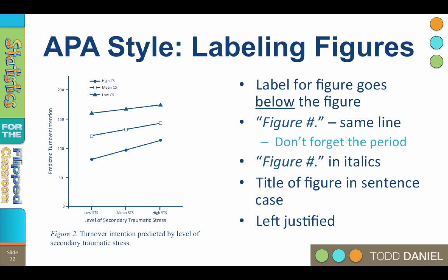When labeling figures in APA style, the label for the figure goes below the figure. Start with a capital figure, and then the figure number, followed by a period. The figure number and period are in italics. Leave one space, and then on the same line, continue by typing the title of the figure in sentence case. Only the first word and any proper nouns are capitalized. As with tables, the title of the figure is left justified and does not end with a period.